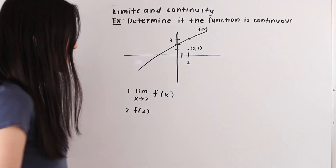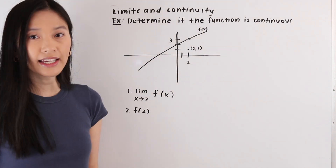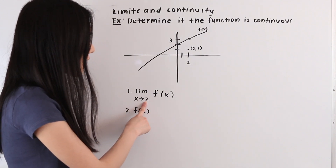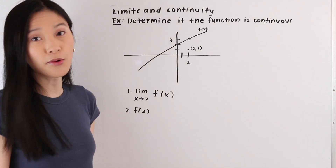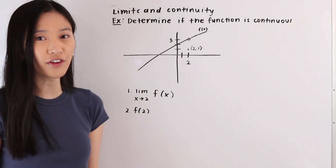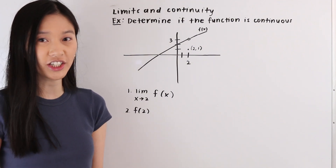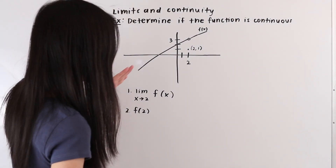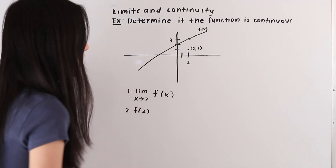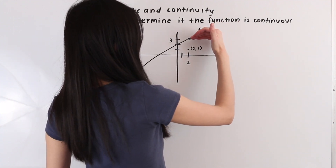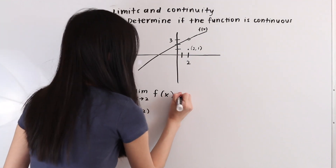We are going to start by taking the limit as x approaches two of f(x). We're taking this limit because we can see from our graph that our removable discontinuity occurs at that point. We can see from our graph that as we approach an x value of two, we are approaching a y value of three from the left-hand side, and as we approach x equals two from the right-hand side, we also approach a y value of three. So this limit is equal to three.